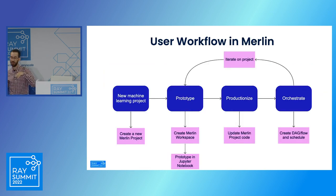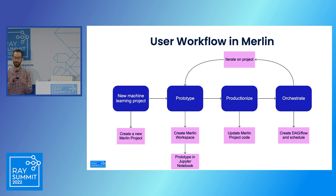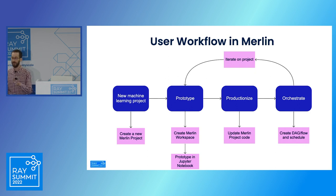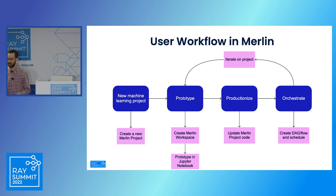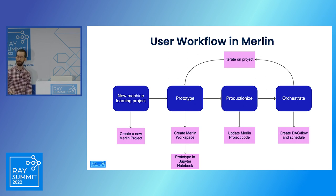Taking a step back to look at the user workflow end-to-end: we start with a new machine learning project by creating a new Merlin project. Then we go into a prototype phase where users can create Merlin workspaces and prototype from their local machine or a Jupyter notebook. Once their code is ready, they push it to the Merlin project repo and then go into the orchestrators to periodically schedule their jobs. When they need to update their project, they go back to the prototype phase and iterate on everything they built.